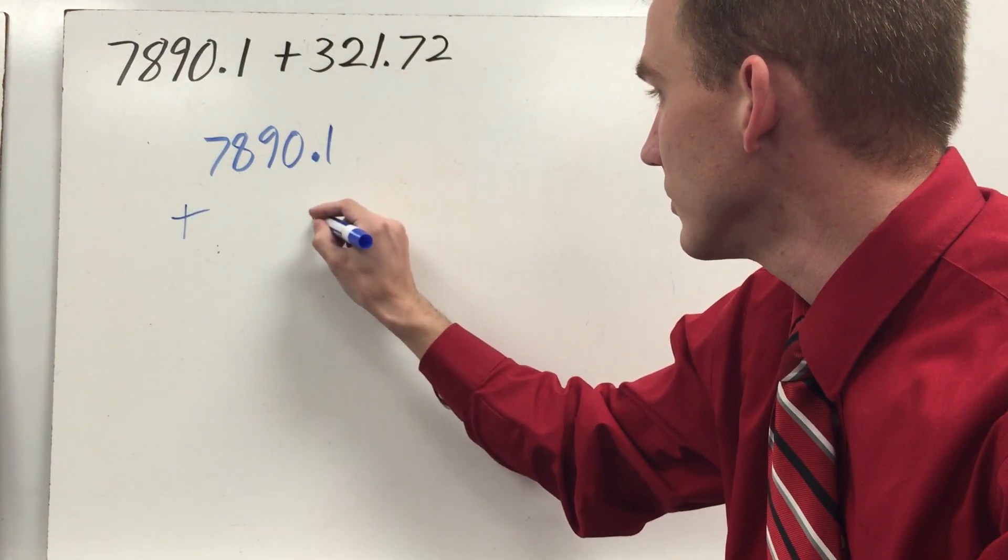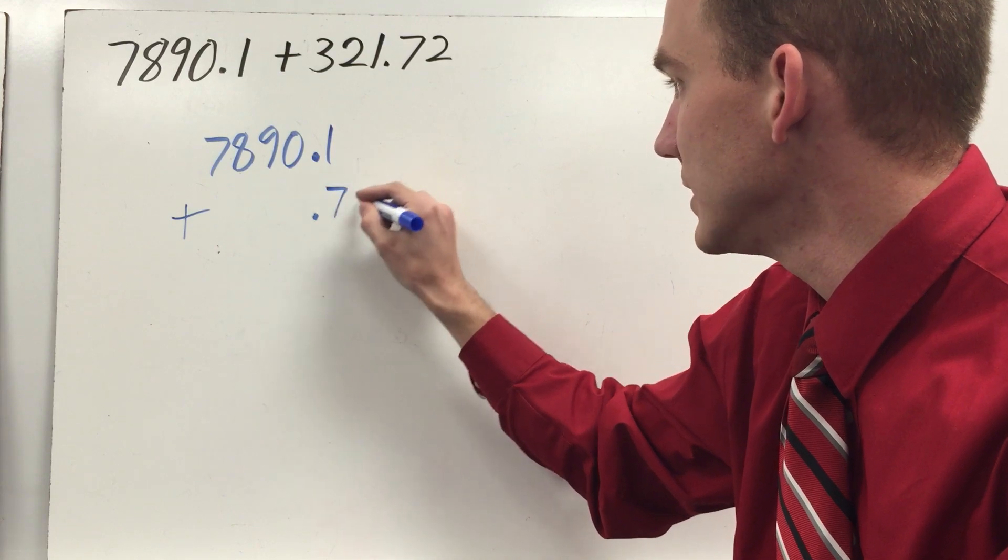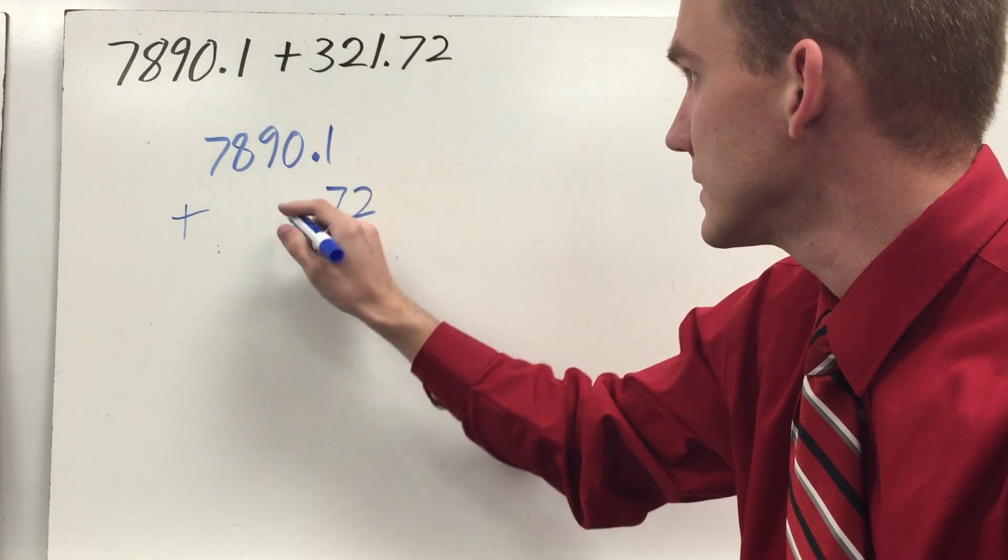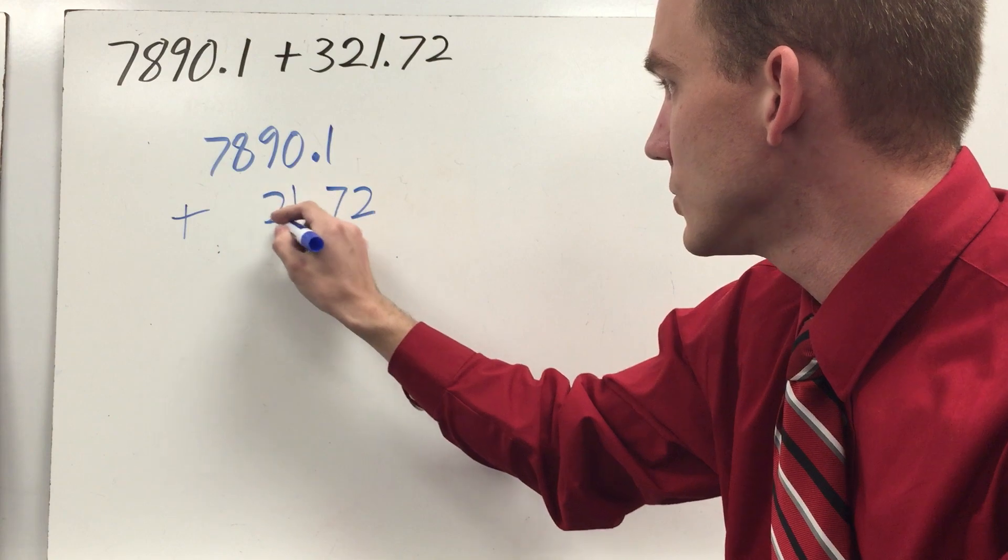Plus, line up my decimal point again. This time I have a seven in the tenths and a two in the hundredths. One, two, three. So 321.72 - three hundred twenty-one and seventy-two hundredths.